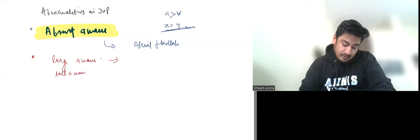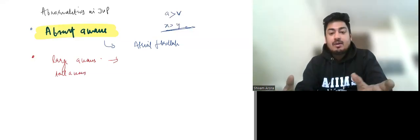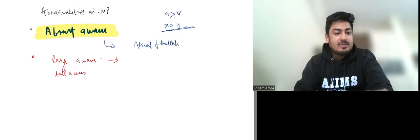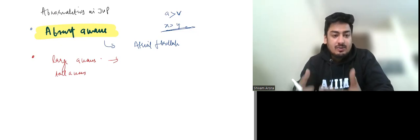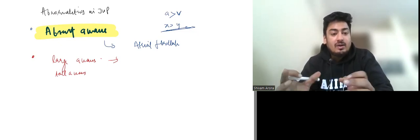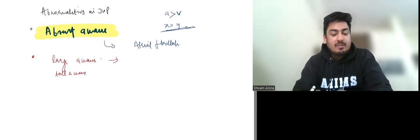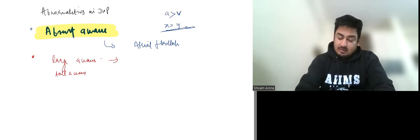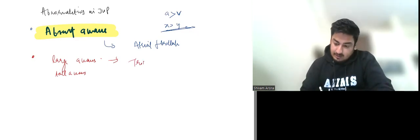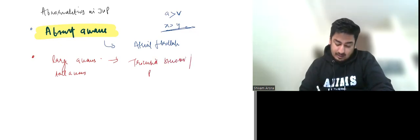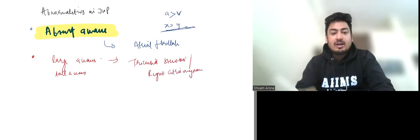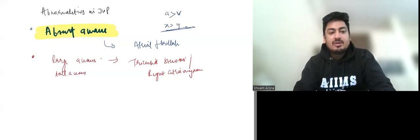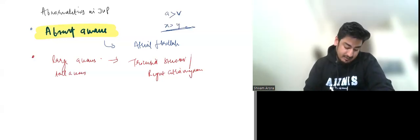The second abnormality is large or tall a waves. This can be seen in tricuspid stenosis, or it can also be seen in right atrial hypertrophy, where the right atrium has to contract against increased resistance, producing a large a wave.